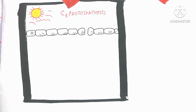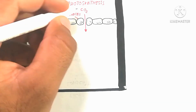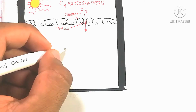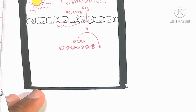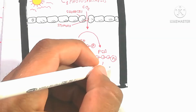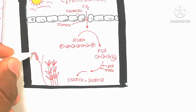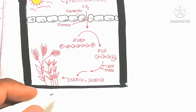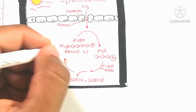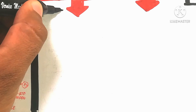In C3 photosynthesis, during daytime the stomata are open and carbon dioxide goes inside. Guard cells regulate the opening and closing of stomata by their turgidity. Carbon dioxide enters the mesophyll cells, which contain palisade and spongy mesophyll cells. RuBP, a five-carbon molecule, converts into PGA, and ATP and NADPH are used to produce sugar, which is ultimately converted into starch.